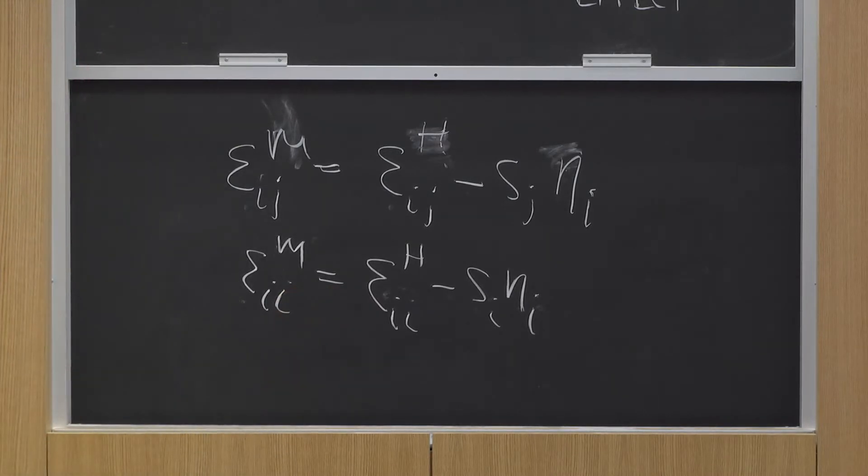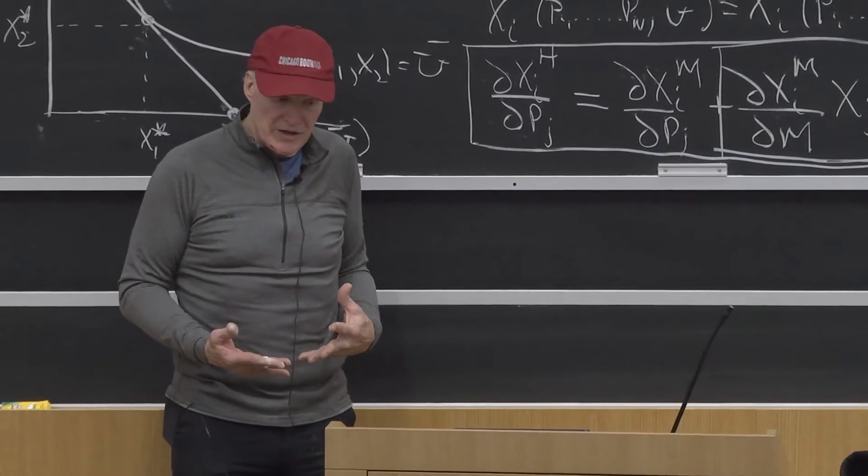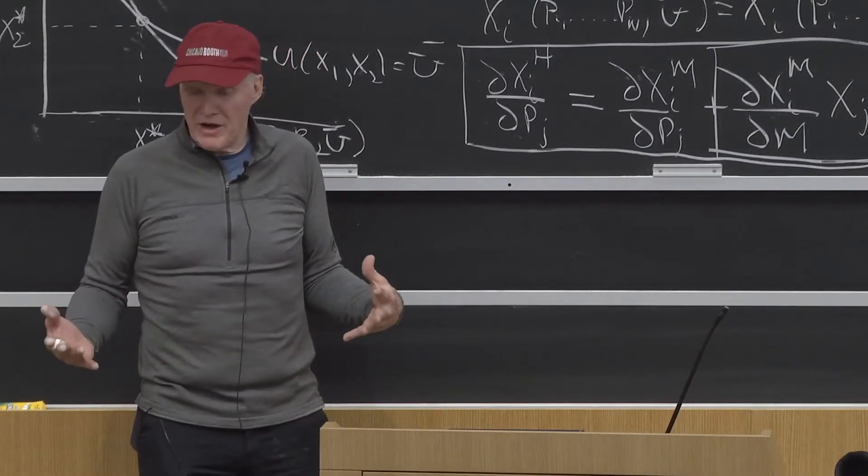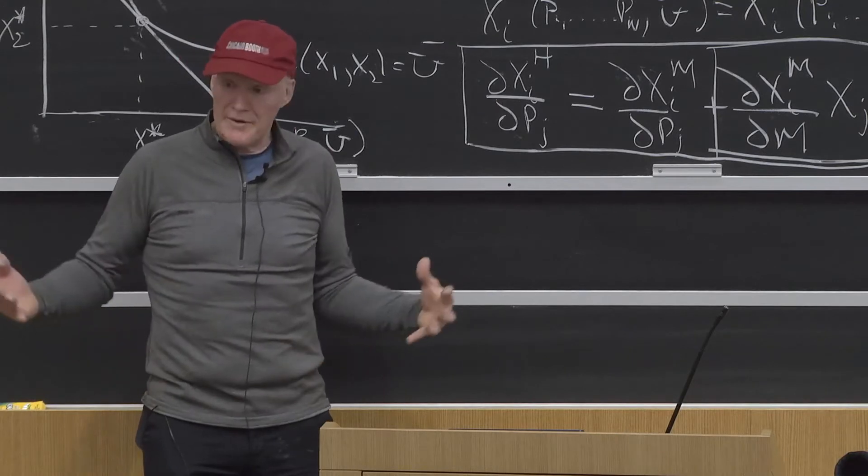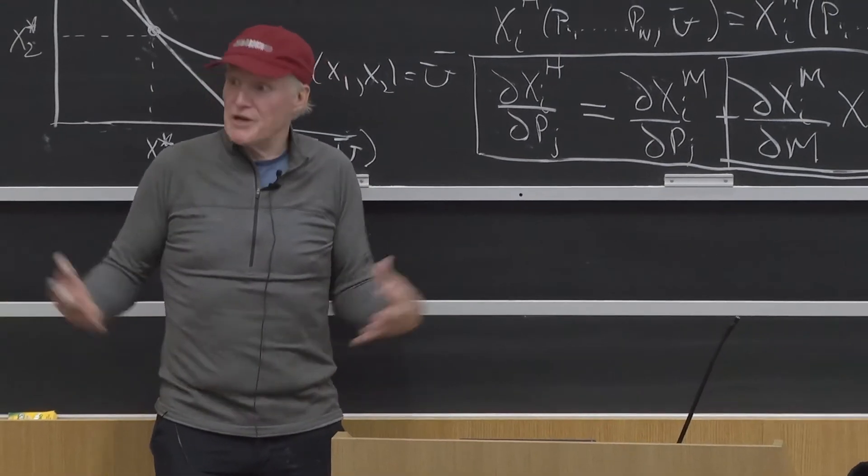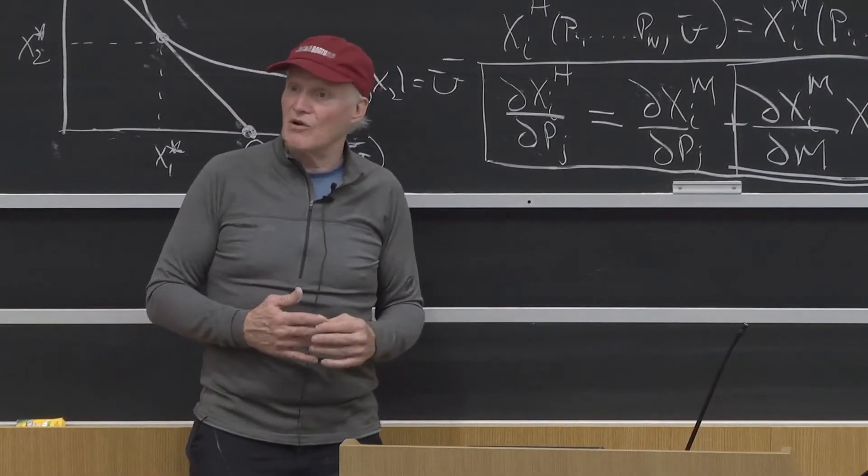The Giffen good case is very weak substitution effect, so when prices fall you don't increase your consumption very much from the substitution effect. On the other hand, you spend a lot of your money on it, so when the price falls you're a lot richer, and at the same time it's also very inferior, so as you get richer you want less of it. That could actually cause you to violate the law of demand.